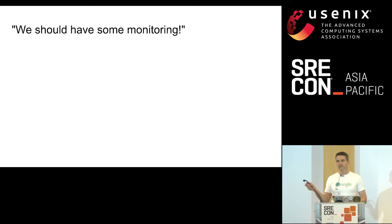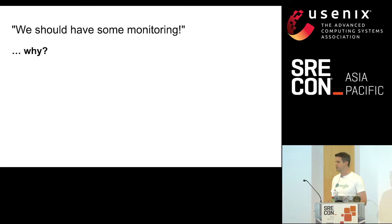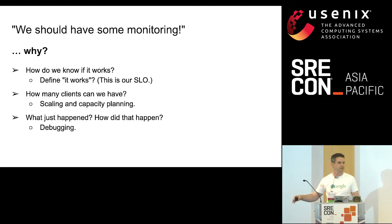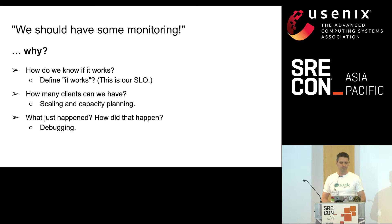We should have some monitoring. But the correct answer is not yes — the correct answer is why? For what specific purpose are we going to have this monitoring? The three most important questions: first, does it work — whatever service we're providing? We need to define what 'it works' even means. This is your SLO, your service level objective. Second, how many clients can we support? This is necessary for scaling and capacity planning. And as SREs, we always ask: what just happened, and how did that happen? This is for debugging, which is related but a different question.